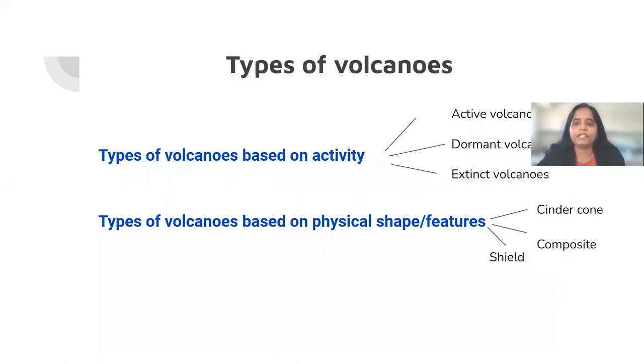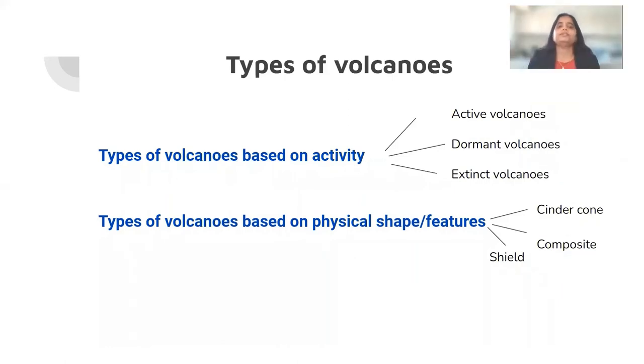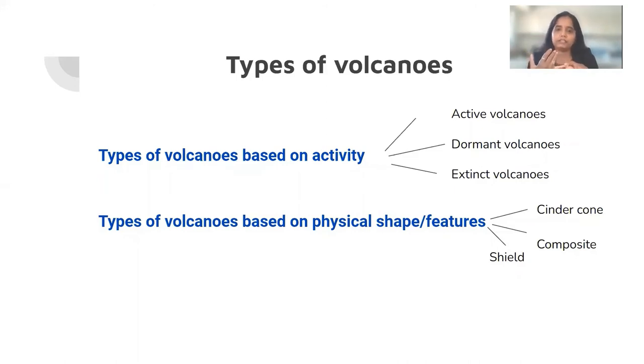Now there are types of volcanoes. Volcanoes based on activity are categorized as: active volcanoes, dormant volcanoes, and extinct volcanoes.